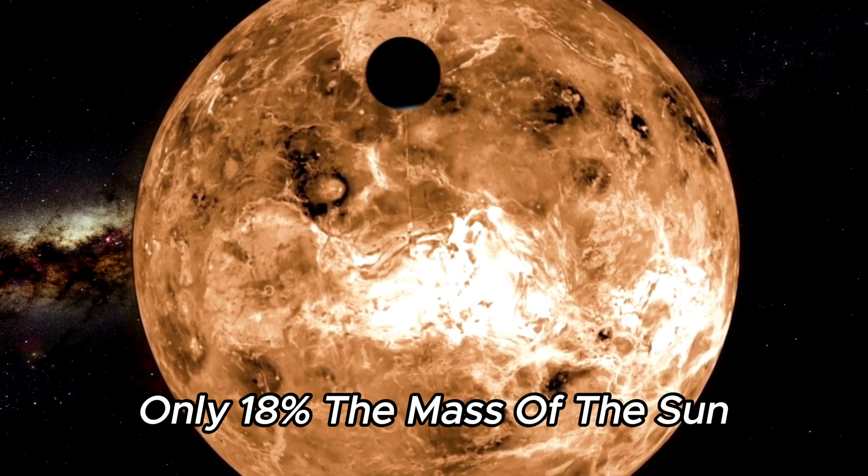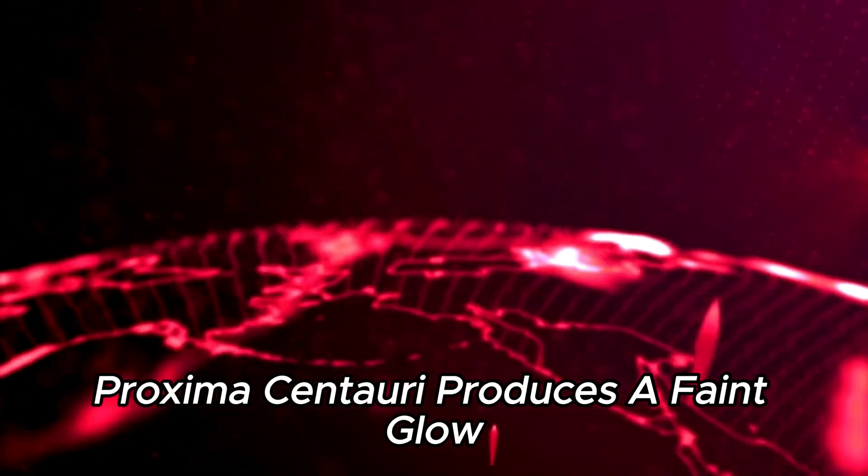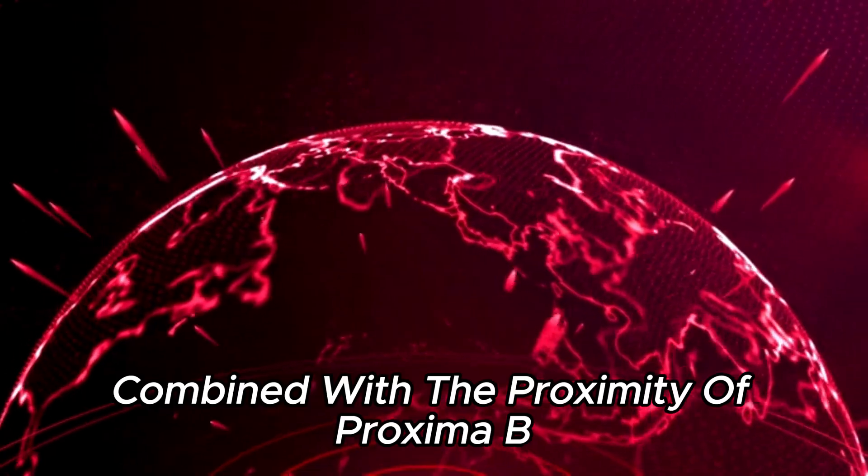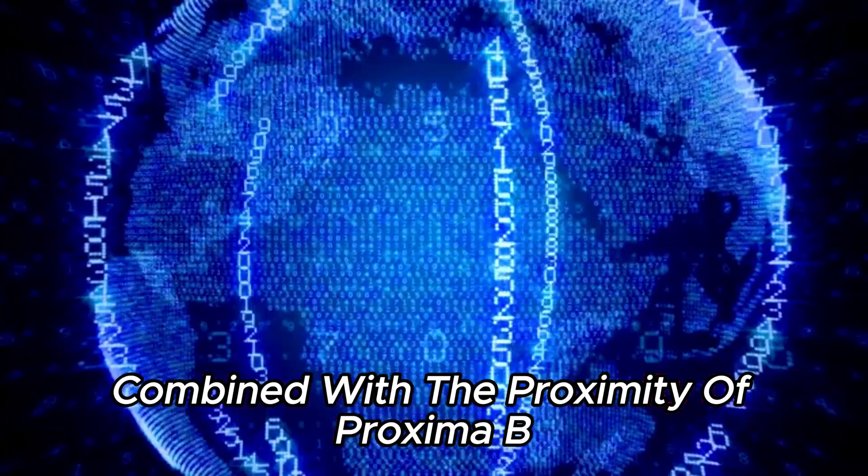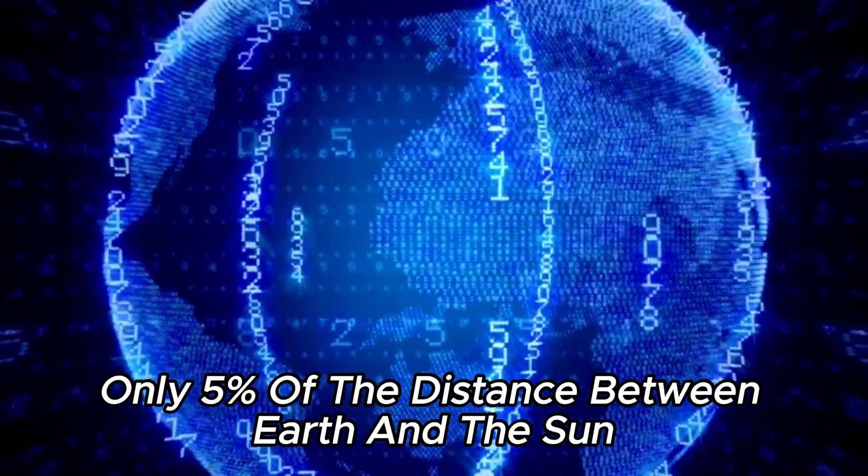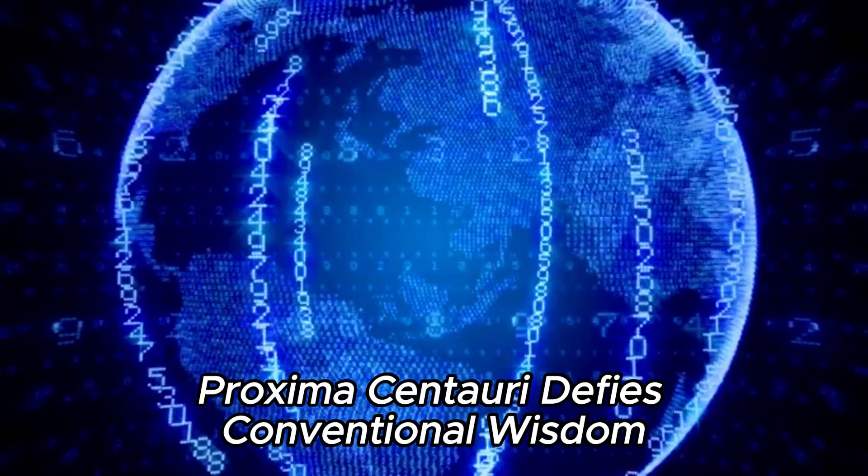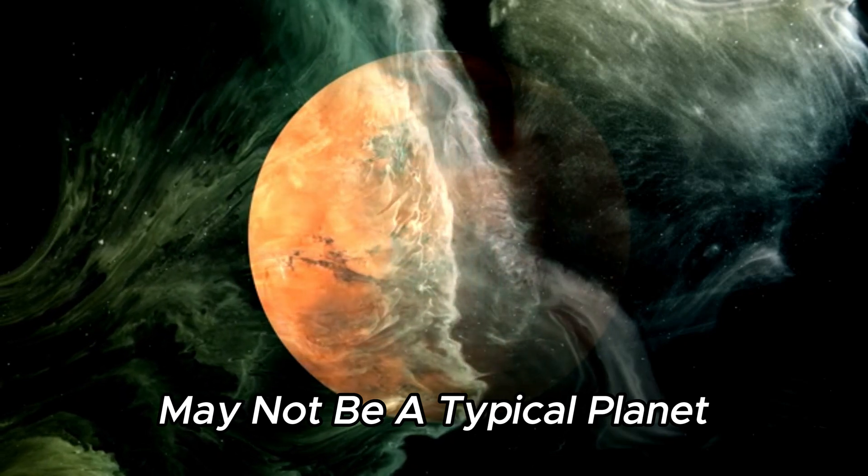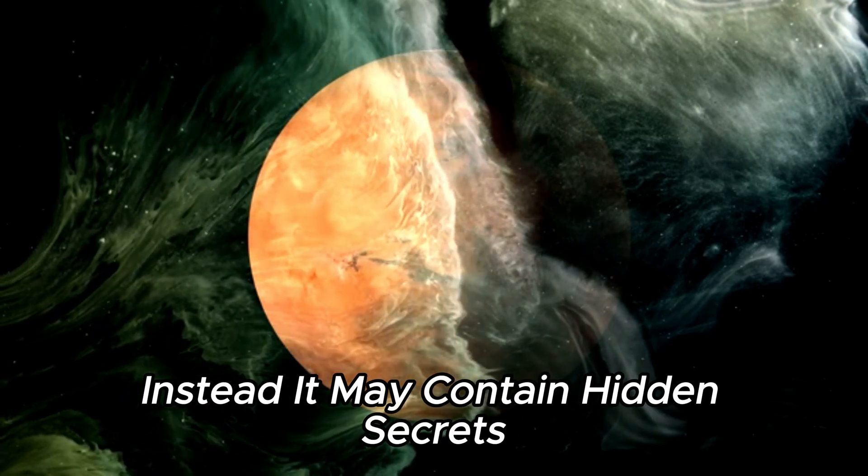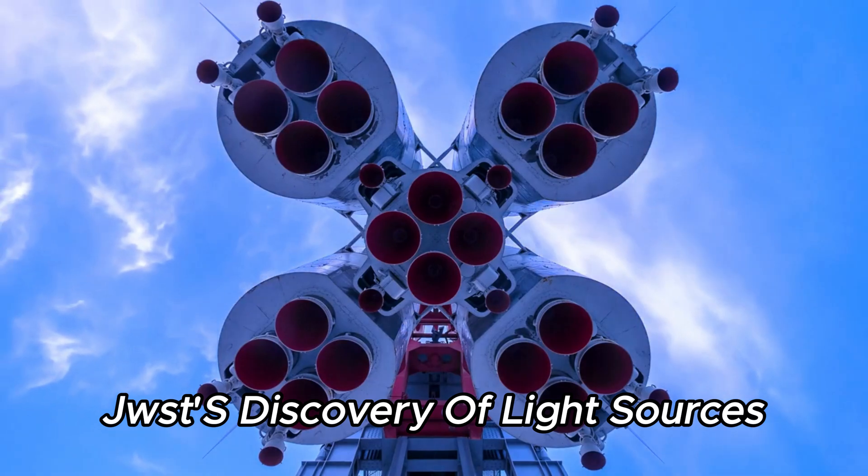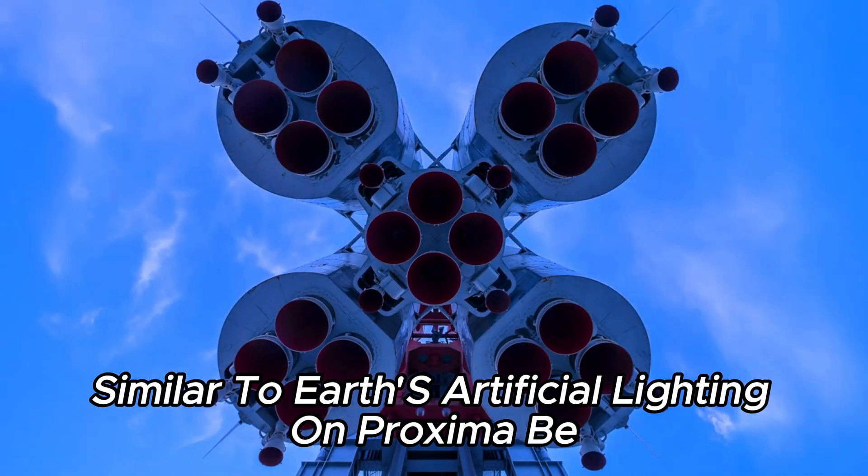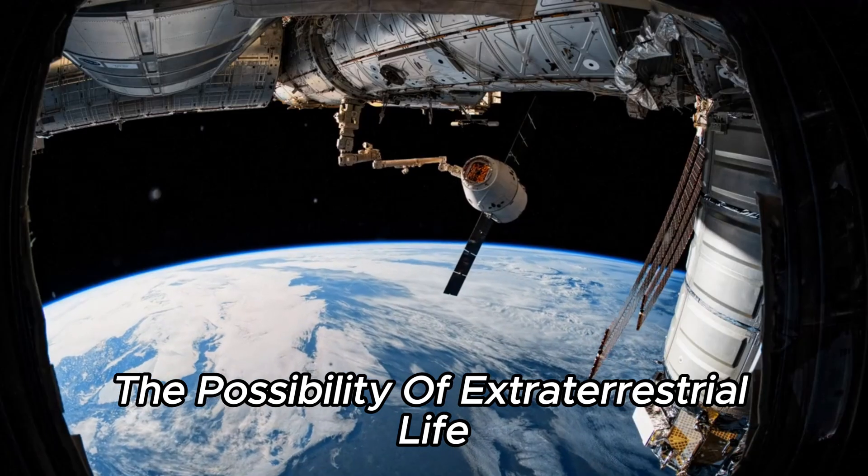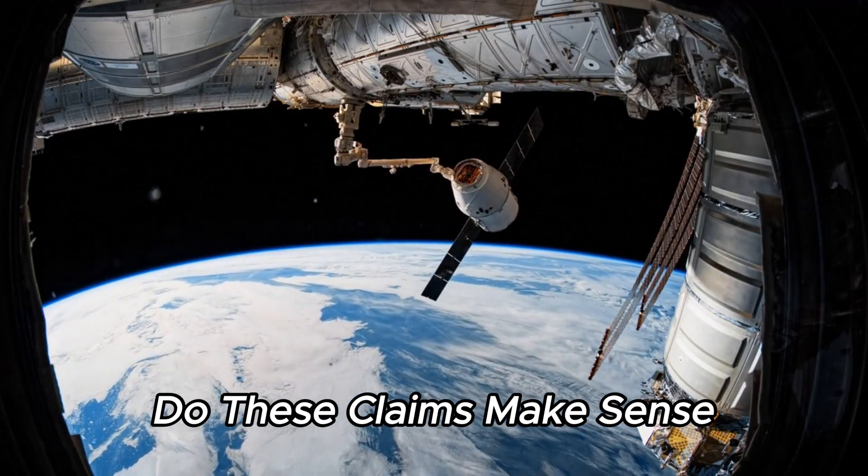At only 18% the mass of the Sun, Proxima Centauri produces a faint glow and emits significantly less light than expected. Combined with the proximity of Proxima b, only 5% of the distance between Earth and the Sun, Proxima Centauri defies conventional wisdom. This suggests that Proxima b may not be a typical planet. Instead, it may contain hidden secrets. JWST's discovery of light sources similar to Earth's artificial lighting on Proxima b has led scientists to consider the possibility of extraterrestrial life. Do these claims make sense?